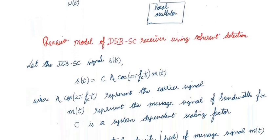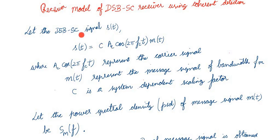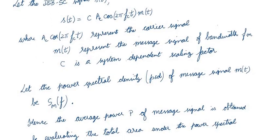We take a double sideband suppressed carrier signal s(t), represented in general form as s(t) = c · Ac · cos(2πfct) · m(t), where Ac · cos(2πfct) is the carrier signal and m(t) is the message signal. Here c is a system-dependent scaling constant. A message multiplied with the carrier gives the double sideband suppressed carrier signal.